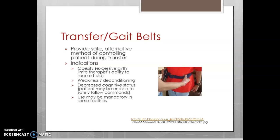Gait belts give us a great option to control the patient's center of gravity. If a patient is weak or obese, both of those may be situations where we have difficulty holding on to the patient, and the gait belt gives us a nice way to do that. A gait belt does not eliminate any possibility of an accident or a fall, but we want to make sure we are using them when needed and using them appropriately. In many facilities, it is policy that they must be used with all patient mobility.